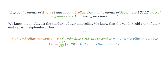We know, given in the question, that the number of umbrellas in August is 120, and that the number of umbrellas sold in September is one-tenth of the original amount of 120. So here, I multiply one-tenth times 120. This should give us the number of umbrellas in October.